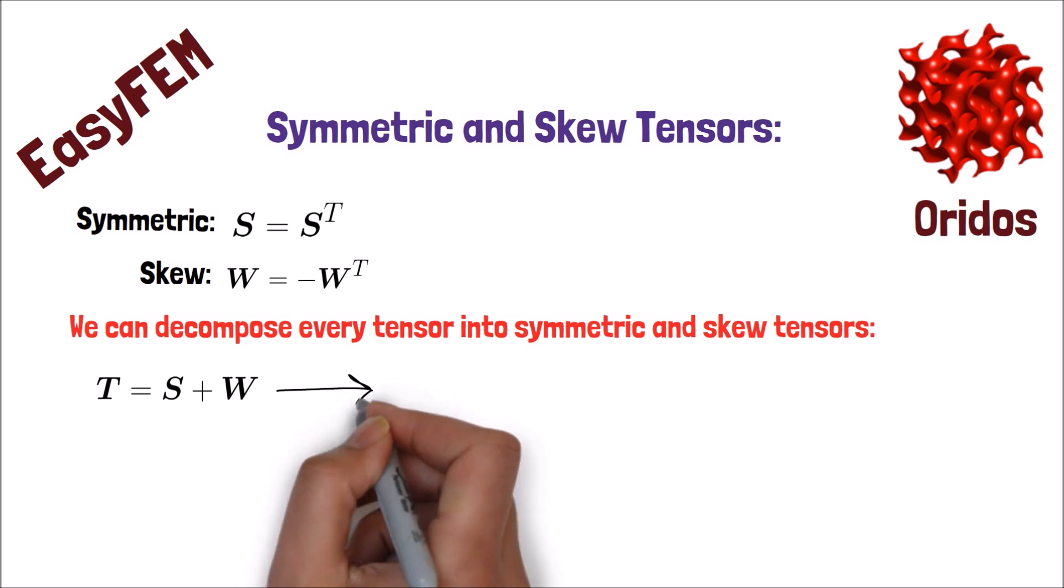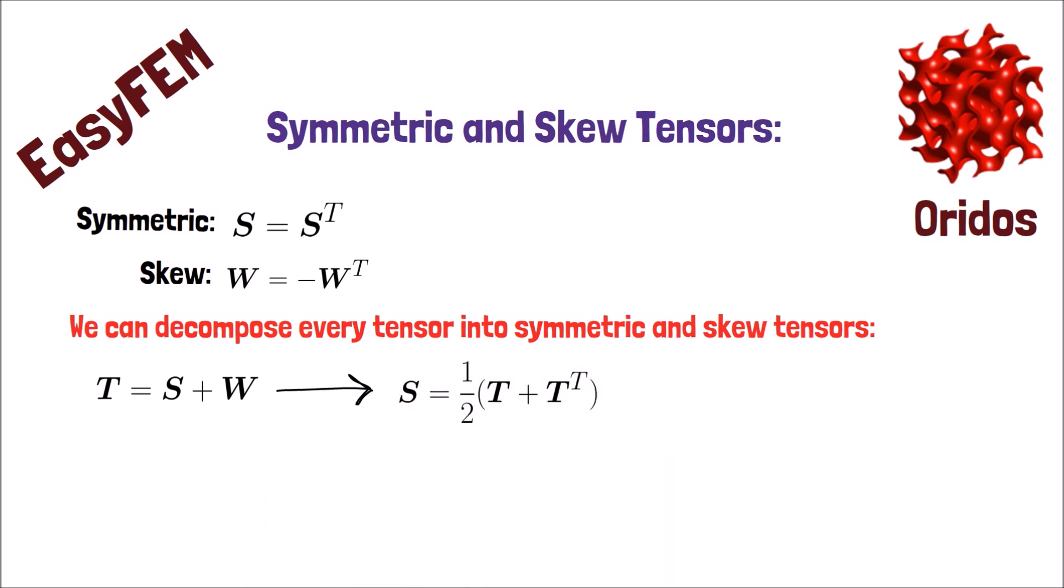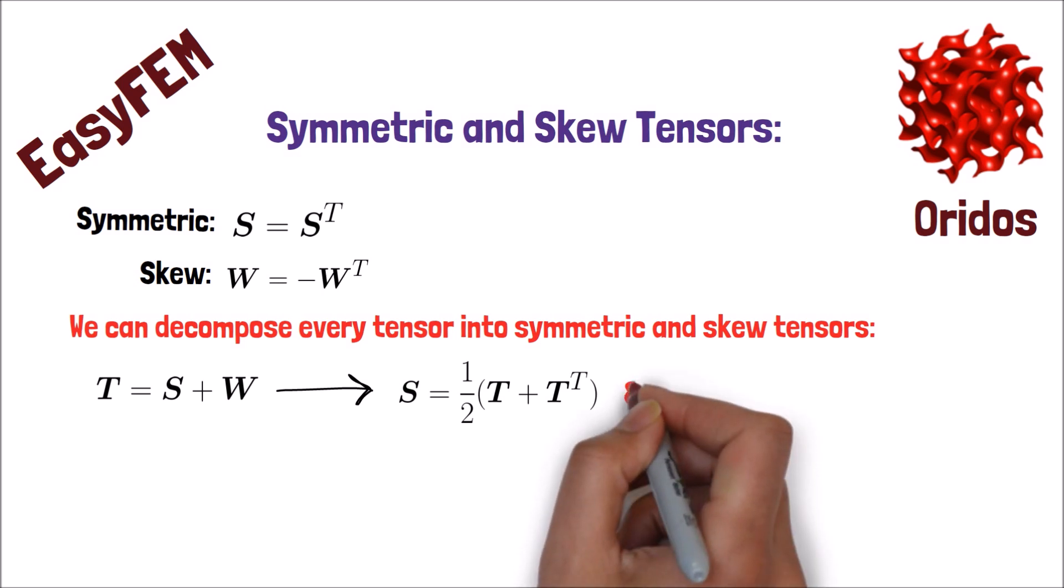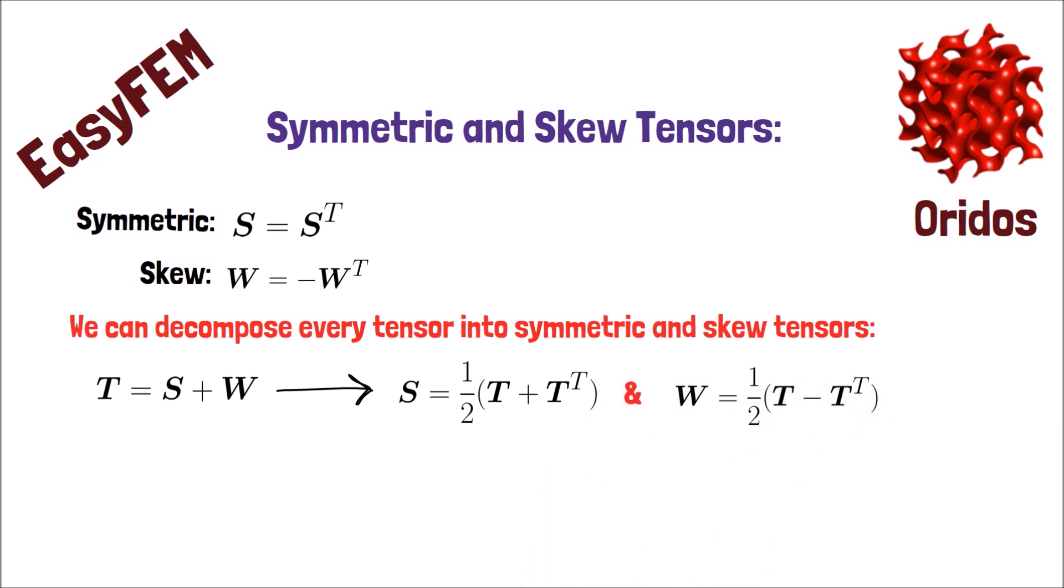We can decompose any tensor into symmetric and skew-symmetric tensors. For example, S is the symmetric part of tensor T defined as one-half T plus T transpose, and W is the skew-symmetric part of T defined as one-half T minus T transpose. Remember, the skew tensor has zero diagonal components.